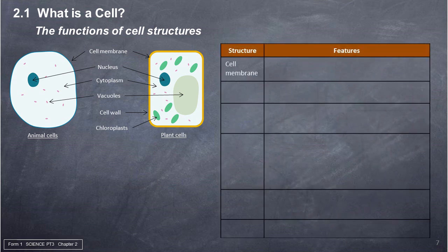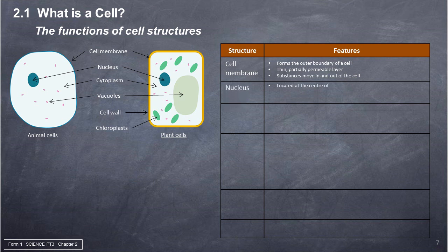Cell membrane: forms the outer boundary of a cell. It is a thin, partially permeable layer through which substances move in and out of the cell. Nucleus: located at the center of the cell, spherical in shape, and is the control center of the cell.